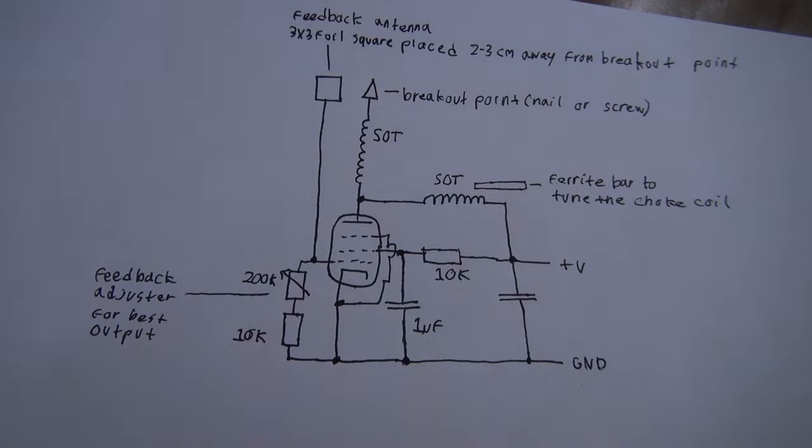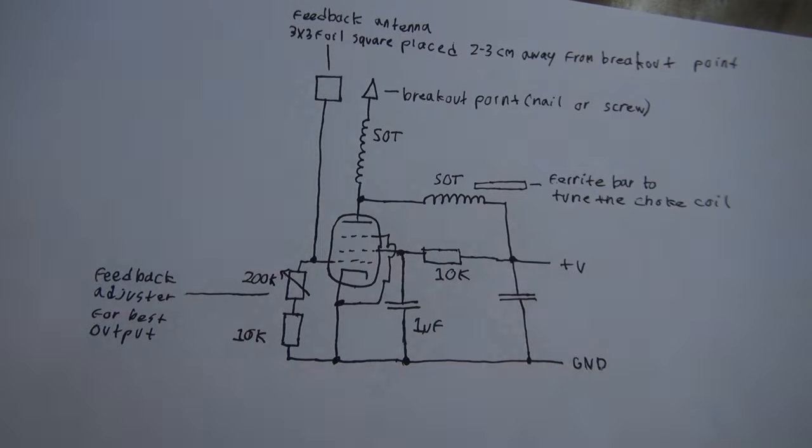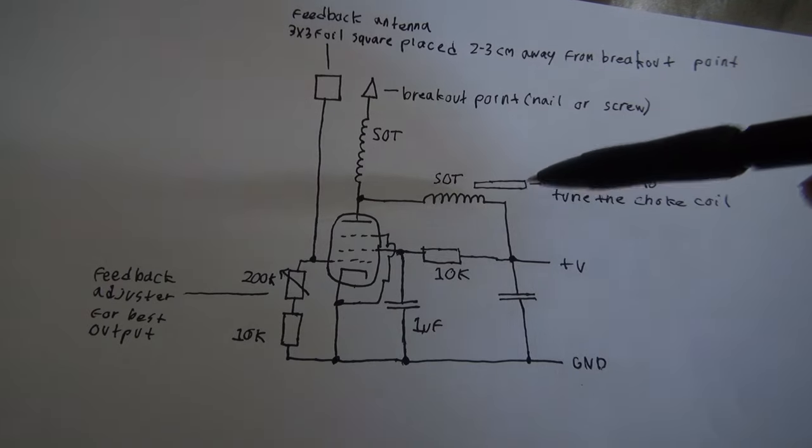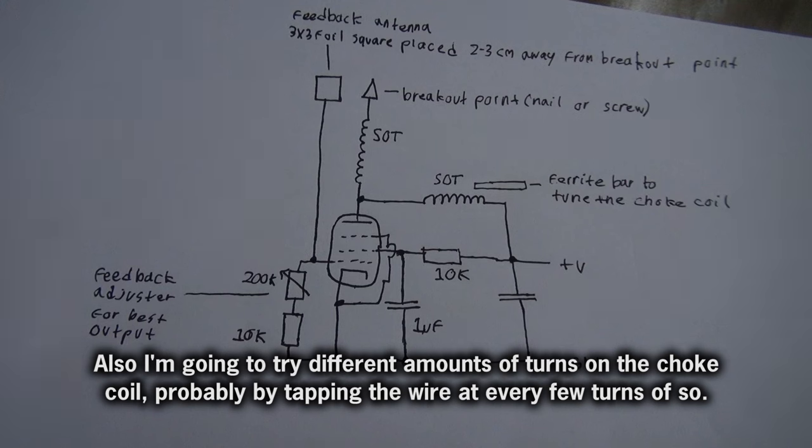And this is another design. It's a bit like that one that didn't work, except I've made a few modifications. So again we have antenna feedback. And of course these resistors to adjust how much feedback the tube gets. But the really interesting thing here is, on the choke coil, I'm going to have a ferrite core that I can move in and out. So I can adjust the inductance. And I think that's really going to help.